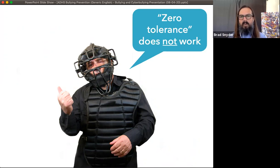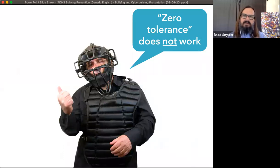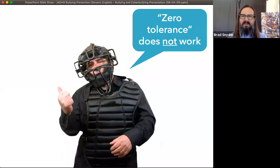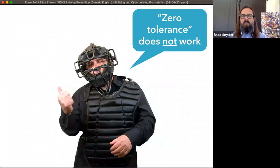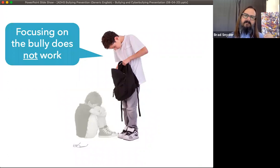It's those bystanders we rely on to know if bullying is occurring, because victims won't tell us either. When we implemented zero tolerance policies in schools — which typically meant a bully would be expelled — we alienated bystanders. Bystanders told us they didn't want the bullying to occur, but they weren't willing to get the bully in that much trouble. So zero tolerance policies don't work for that reason, and also because they focus on the bully as the cause of the problem.